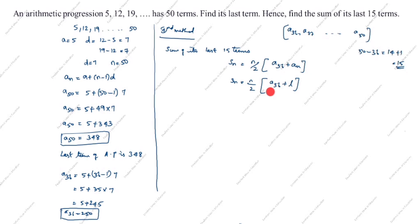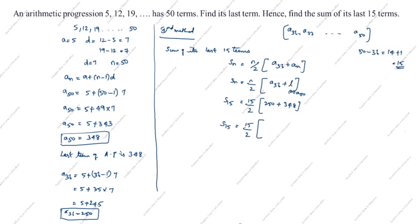Now we have calculated A₃₆. The last term L is equal to A₅₀, which is 348. S₁₅ is equal to 15 by 2, with n equal to 15. A₃₆ is 250 and the last term A₅₀ is 348. So S₁₅ is equal to 15 by 2, open the bracket, 250 plus 348.